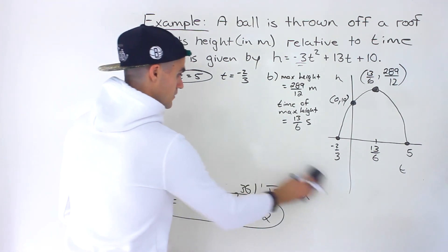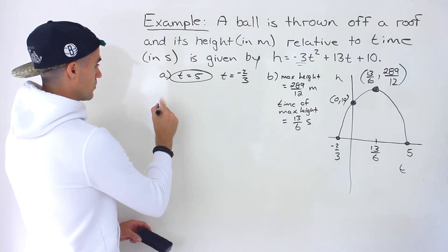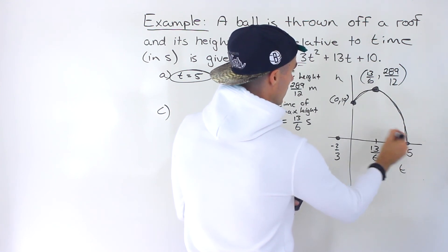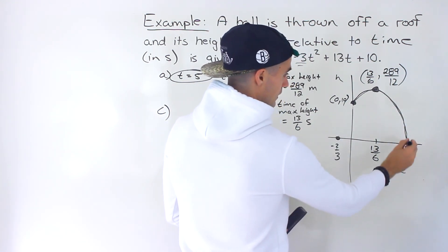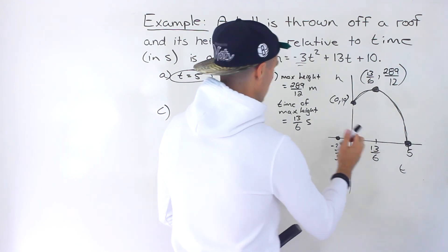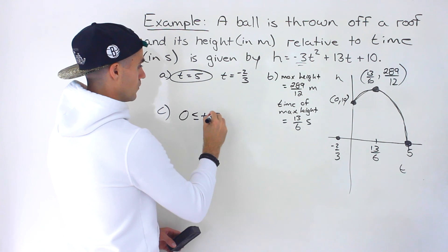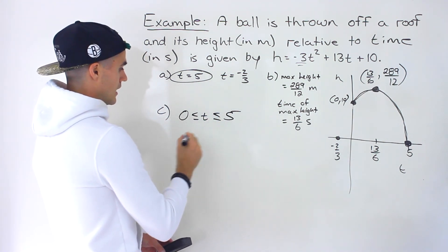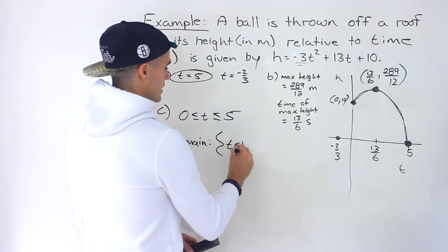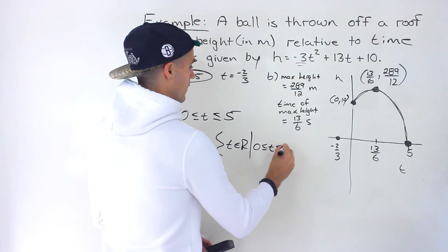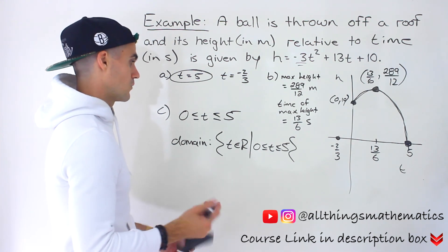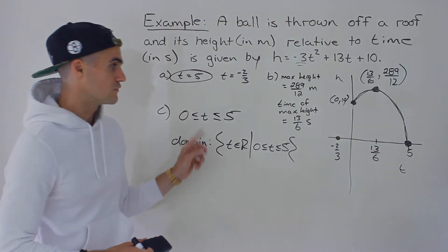Finally, part C: what are the valid t values? Because we're dealing with a word problem, we ignore the part of the parabola to the left of zero — time can't be negative, and height can't be negative either, so we wouldn't extend the graph beyond where the ball lands. The valid t values are from 0 to 5 seconds. If your teacher is covering domain — it's a grade 11 concept — then t can be any real number between 0 and 5 inclusive. That's how you would state the domain or the valid values for t.